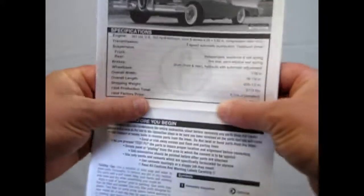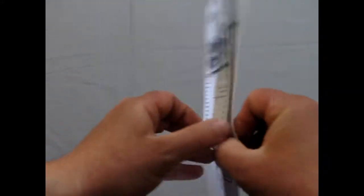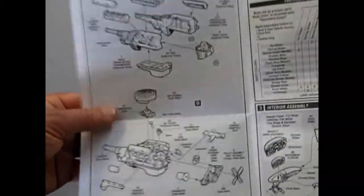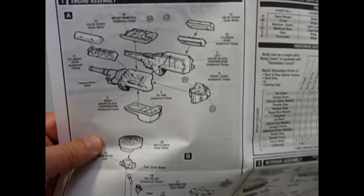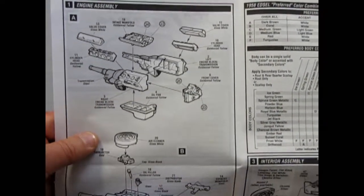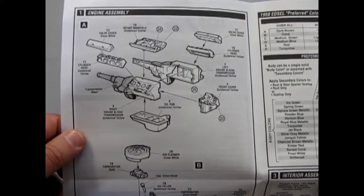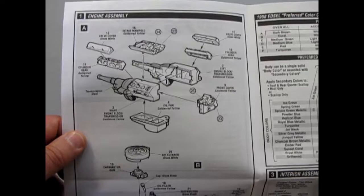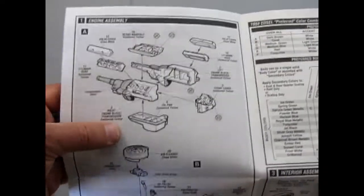Okay, '58 Edsel Pacer gives you a nice description here on it. This is one of those kits that was built by the AMT staff or designers when they were trying to compete with Revell Monogram back in the early '90s, and so they have a very excellent kit with multi pieces in it.